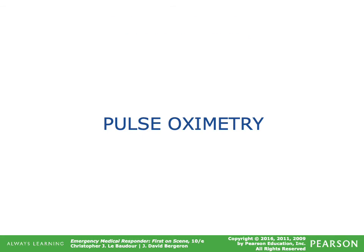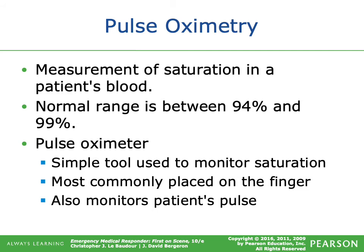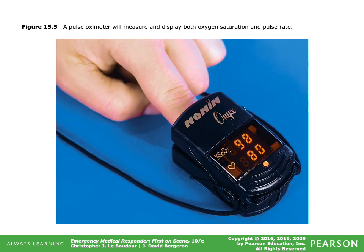Pulse oximetry is a measurement of oxygen saturation in the patient's blood. Normal range is between 94 and 99%. A pulse oximeter is a simple tool used to monitor saturation — most commonly placed on the finger — and it also monitors the patient's pulse. Note that the pulse rate displayed is only accurate if there is good pulsatile flow and the patient's pulse is regular; an irregular pulse makes the heart rate reading unreliable. The image shows SpO2 on top and a heart rate of 80 below.